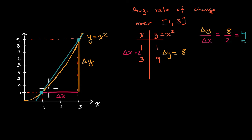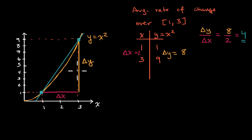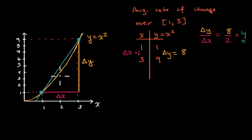By looking at the secant line in comparison to the curve over that interval, it hopefully gives you a visual intuition for what average rate of change means. In the beginning part of the interval, the secant line is actually increasing at a faster rate. As we get closer to three, the yellow curve is increasing at a faster rate than the secant line, and then they eventually catch up. That's why the slope of the secant line is the average rate of change — it's not the exact rate of change at every point. The curve's rate of change is constantly changing, slower at the beginning and increasing at a higher rate as we approach three.